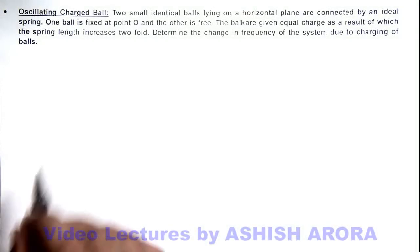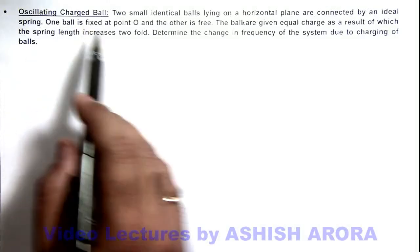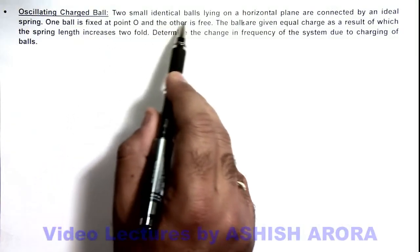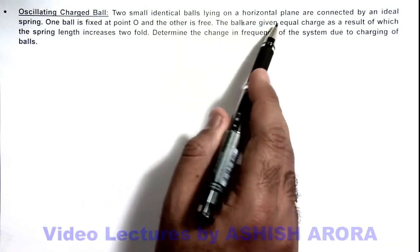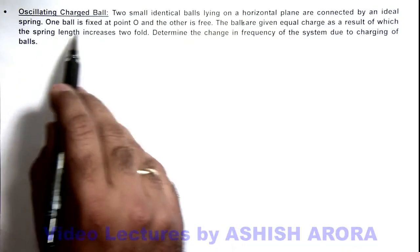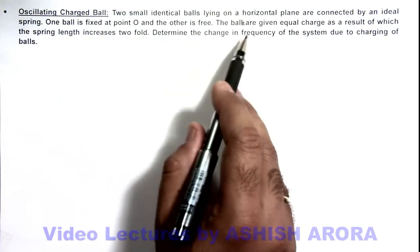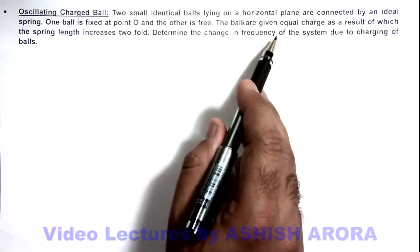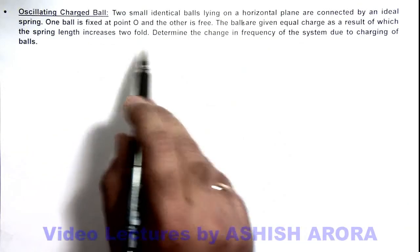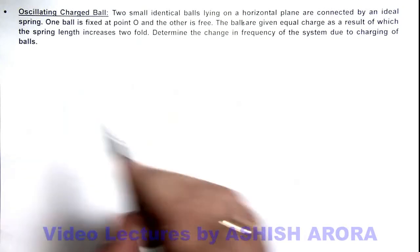Let's analyze an illustration of oscillating charged ball. We can see that two small identical balls lying on a horizontal plane are connected by an ideal spring. One ball is fixed at point O and the other is free. The balls are given equal charges, as a result of which the spring length increases twofold. We are required to find the change in frequency of the system due to charging of balls.